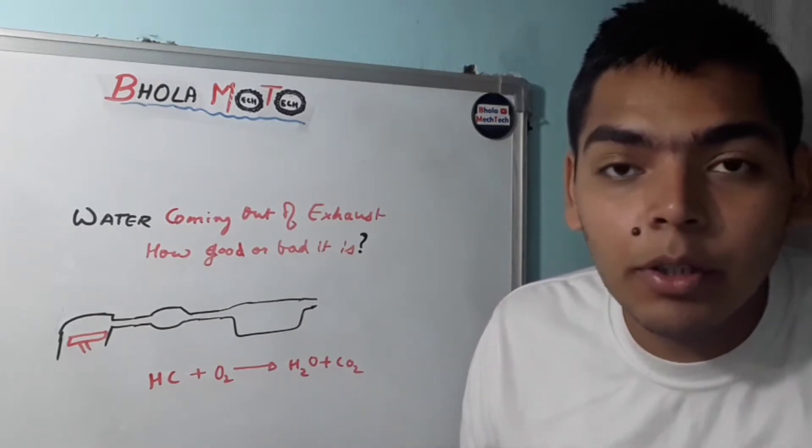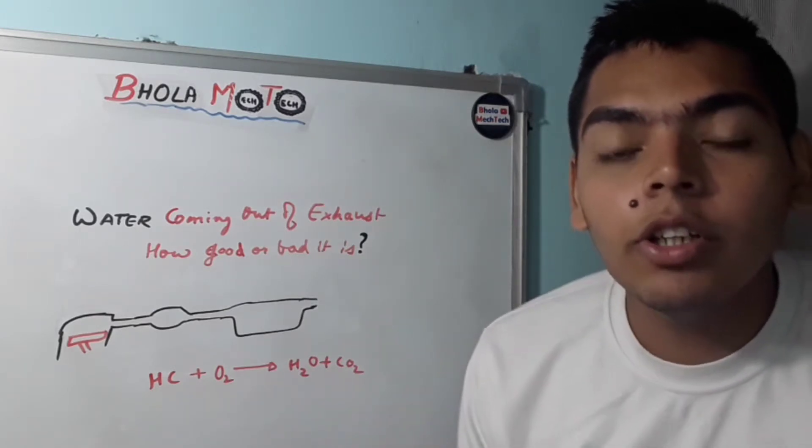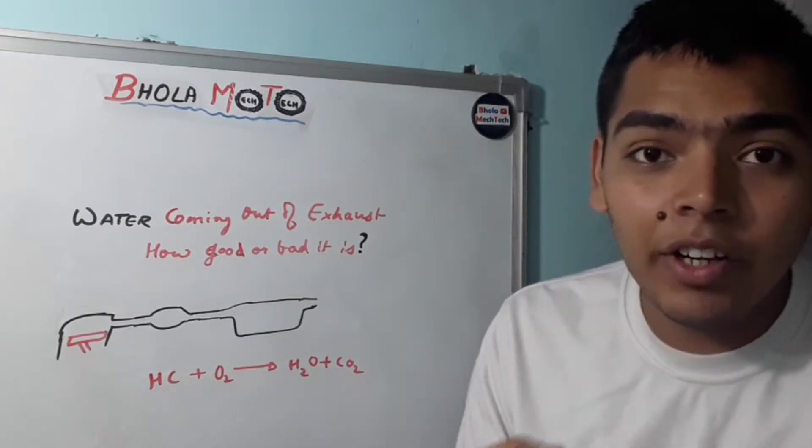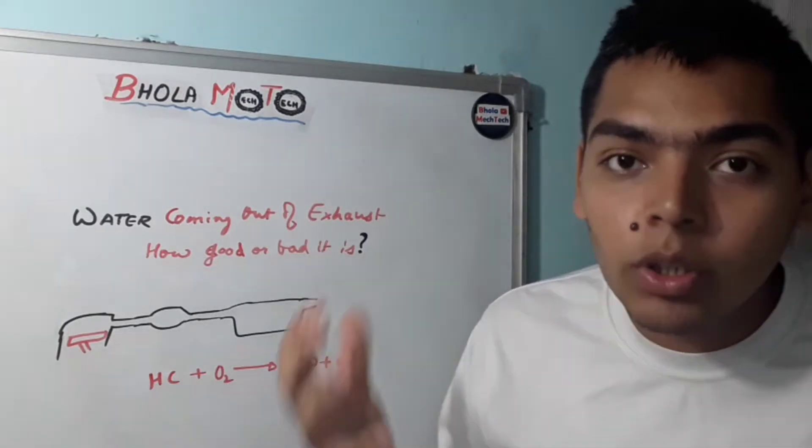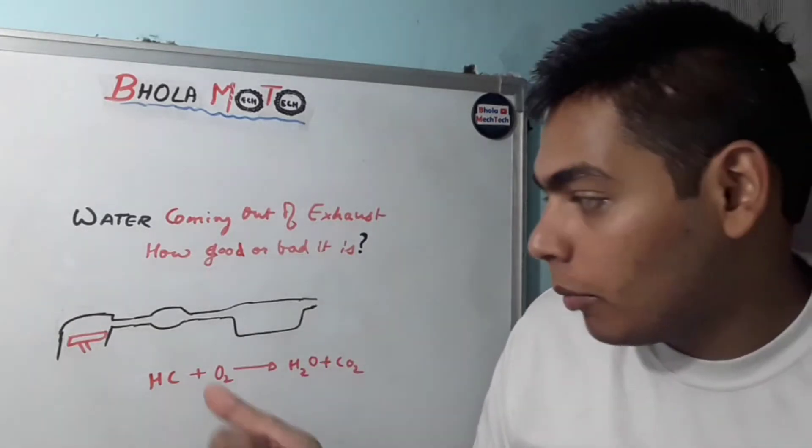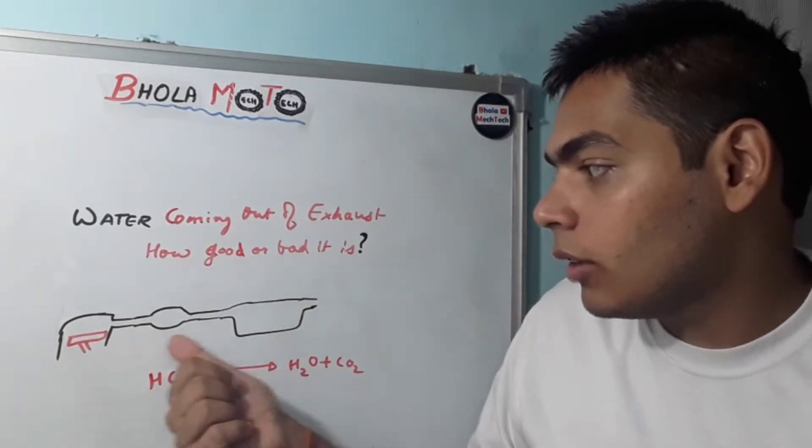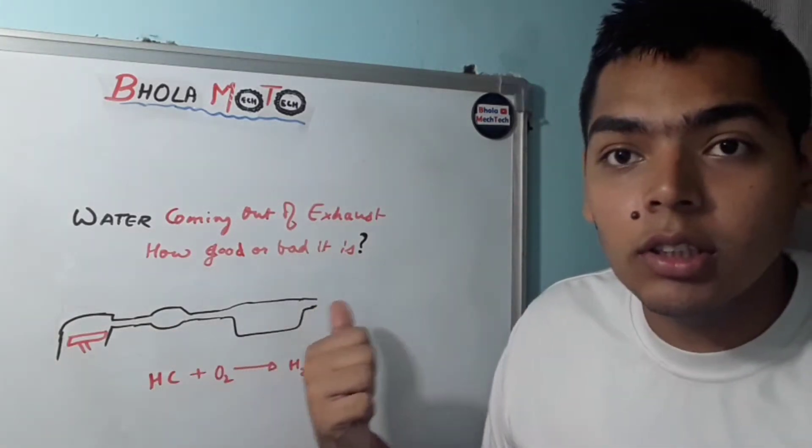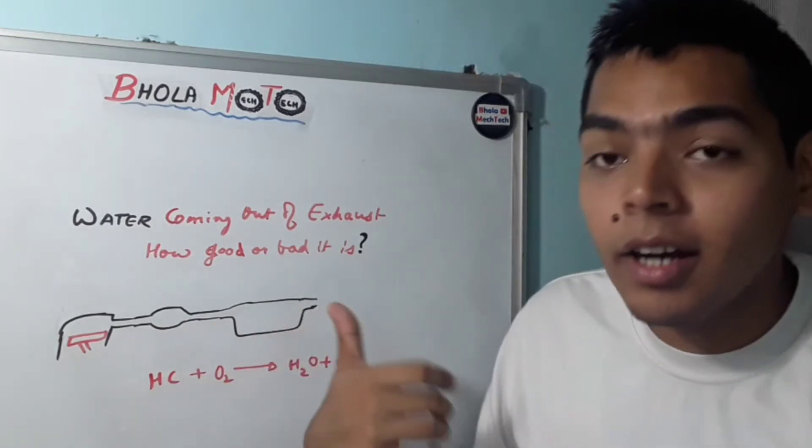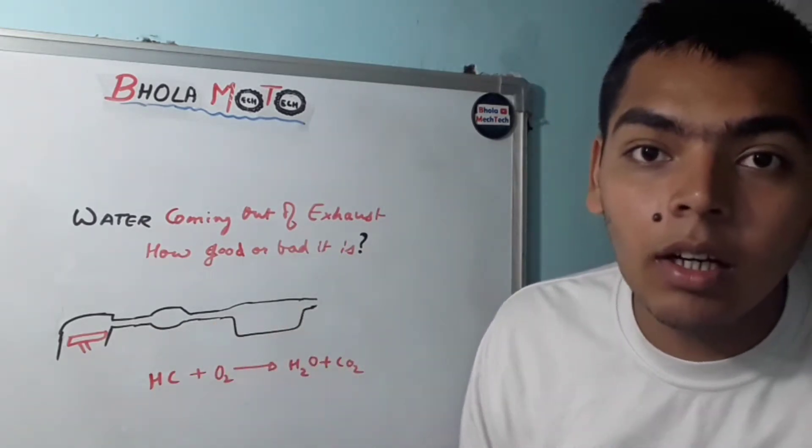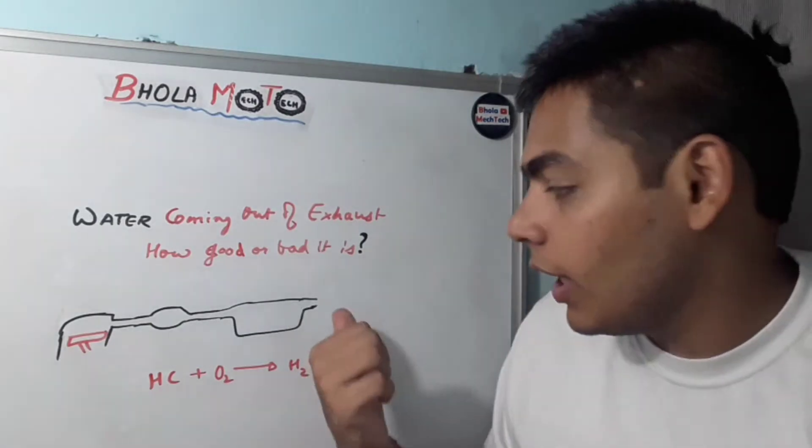When the exhaust gases are produced, the humidity of this air-fuel mixture will be converted into vapors. Due to the colder temperature outside, while coming through this exhaust path, this may get condensed and make water at the end of the exhaust path. In this way, water is produced in the rainy season more.